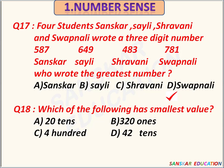Which of the following has the smallest value? Options are 20 tens, 321 ones, 442 tens. 20 tens has the smallest value. Option A is the correct answer.